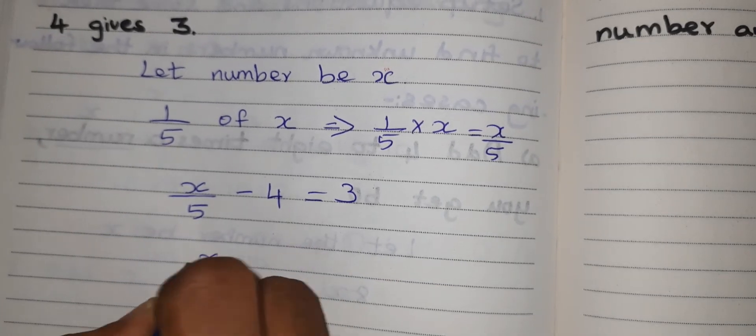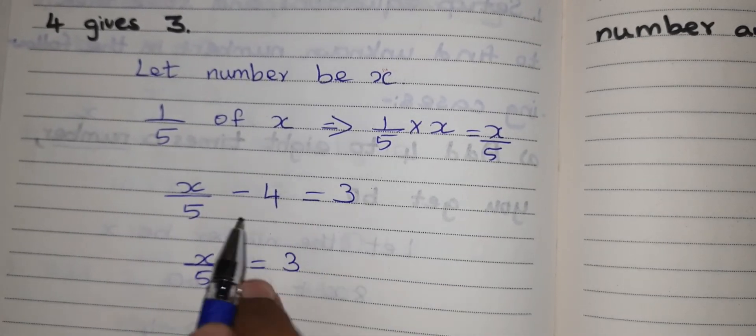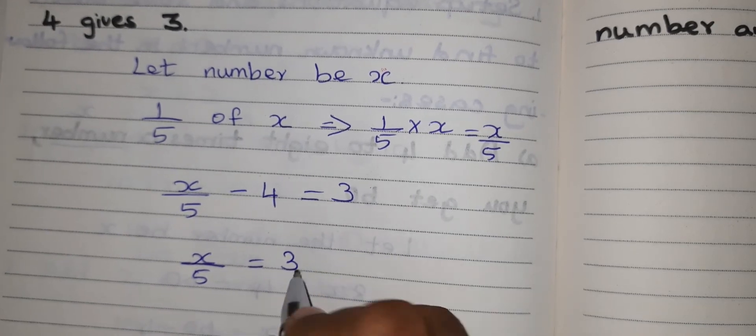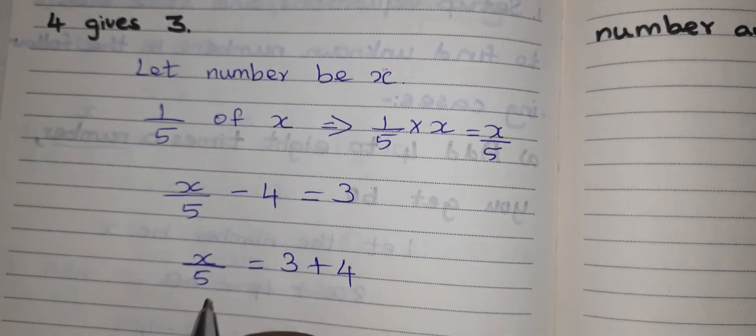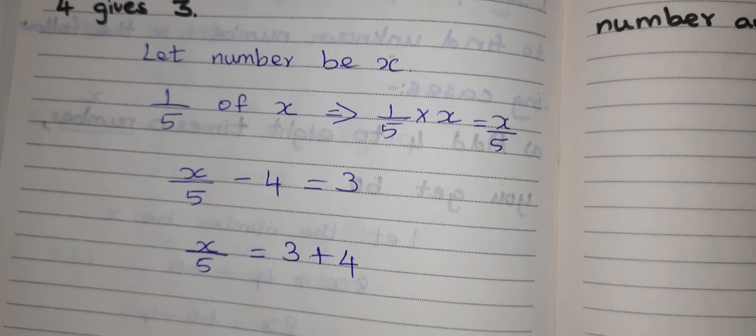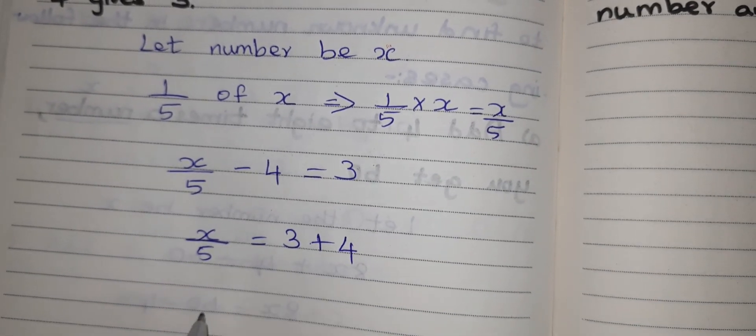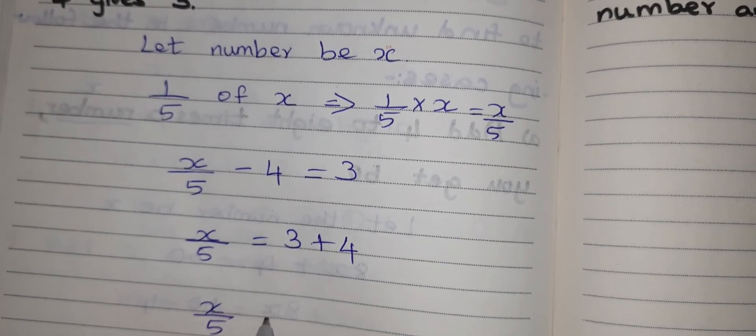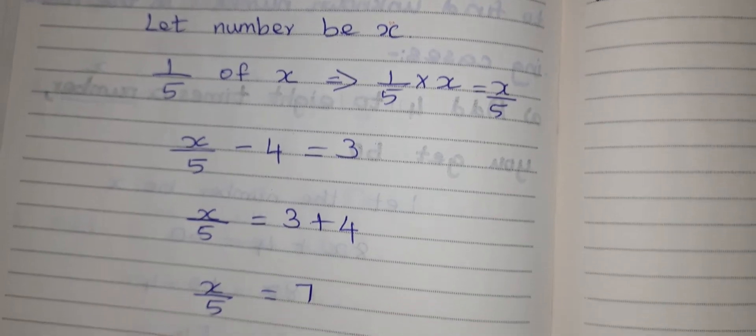So keep X by 5 as it is, equal to 3. When minus goes to this side it will become plus. So 3 plus 4. What is 3 plus 4? 7.